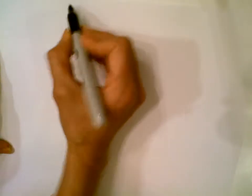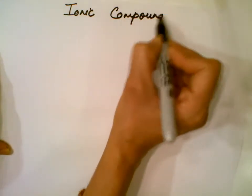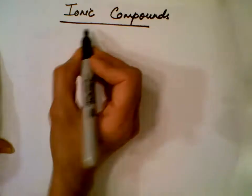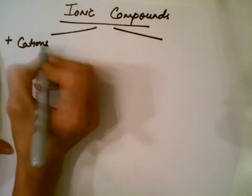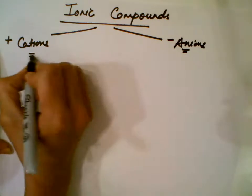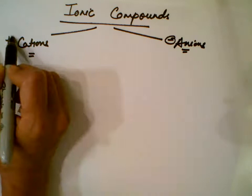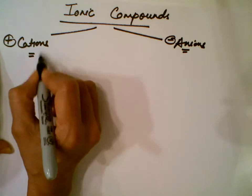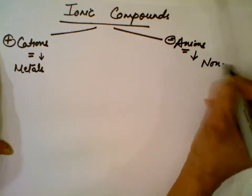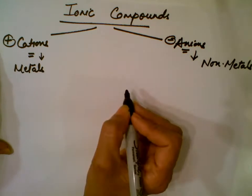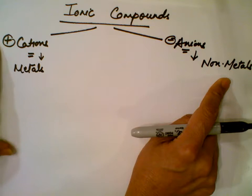Today we are learning about basic stuff on ionic compounds. Ionic compounds are made from positive cations and negative anions — oppositely charged ions. Anions are negatively charged and cations are positively charged. Cations are formed from metals and anions are formed from non-metals. Generally, ionic compounds are formed between metals and non-metals by transfer of electrons.